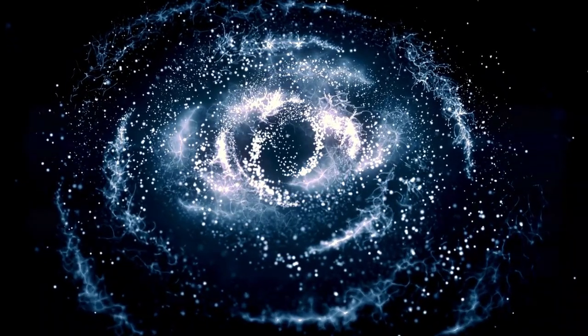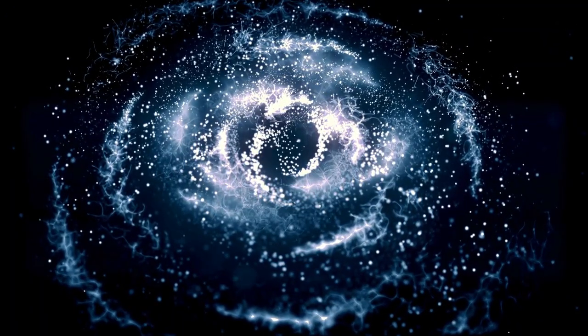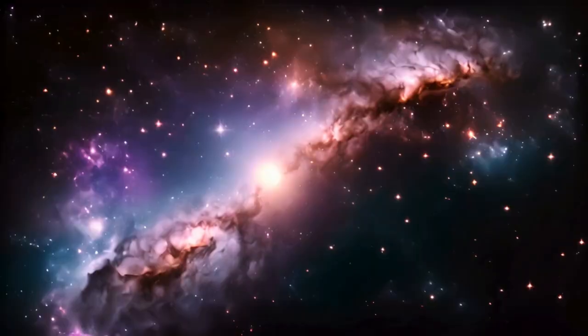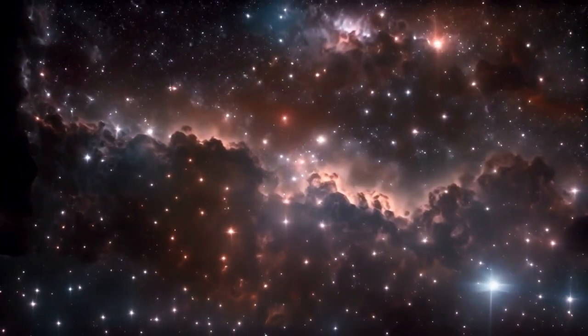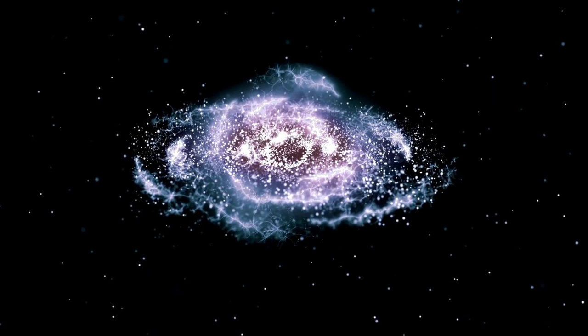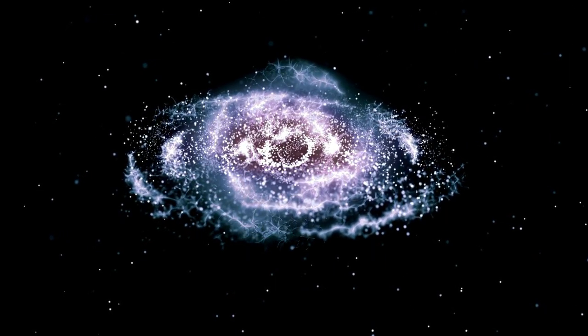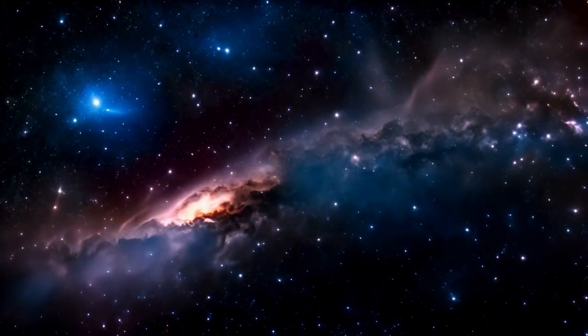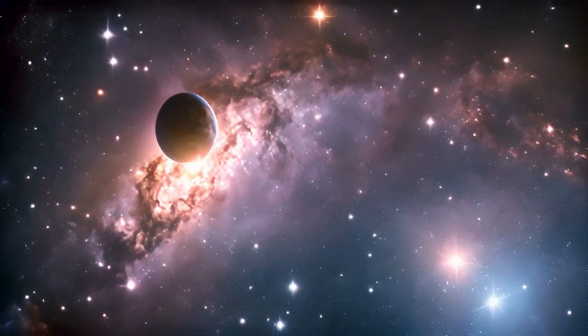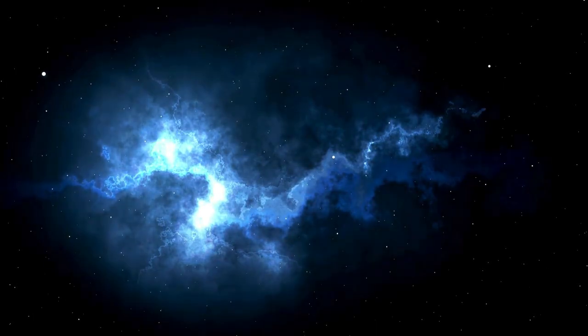The extreme stellar density within these protoglobular clusters reveals profound insights about conditions in the early universe. Stars formed in incredibly crowded environments where stellar interactions were frequent and intense. Such proximity likely influenced the types of stars that formed and how they evolved. Comparing these protoglobular clusters to mature ones in our Milky Way connects the beginning and end points of cosmic evolution, spanning almost the entire age of the universe. Modern clusters contain primarily old, low-mass stars, while these proto-clusters likely contained many massive, bright stars that have since exploded as supernovae.